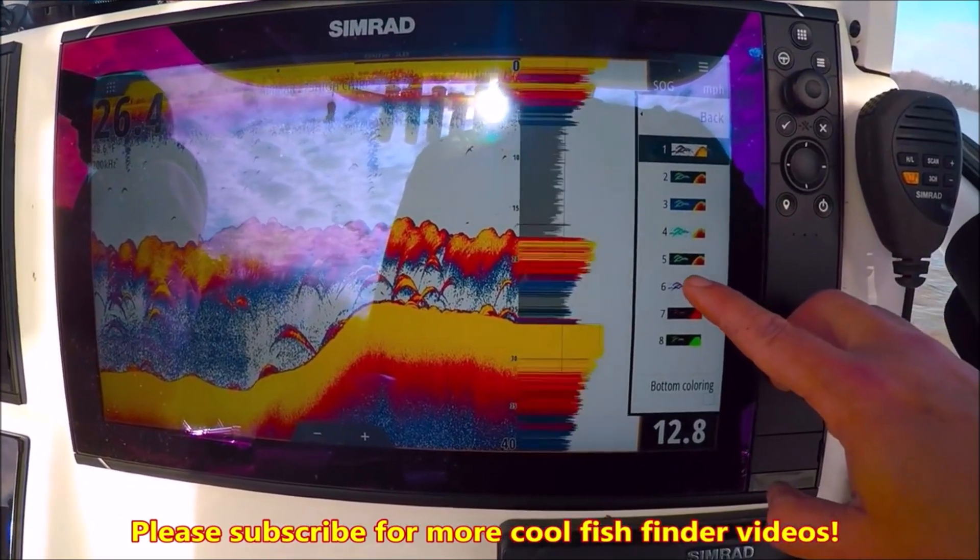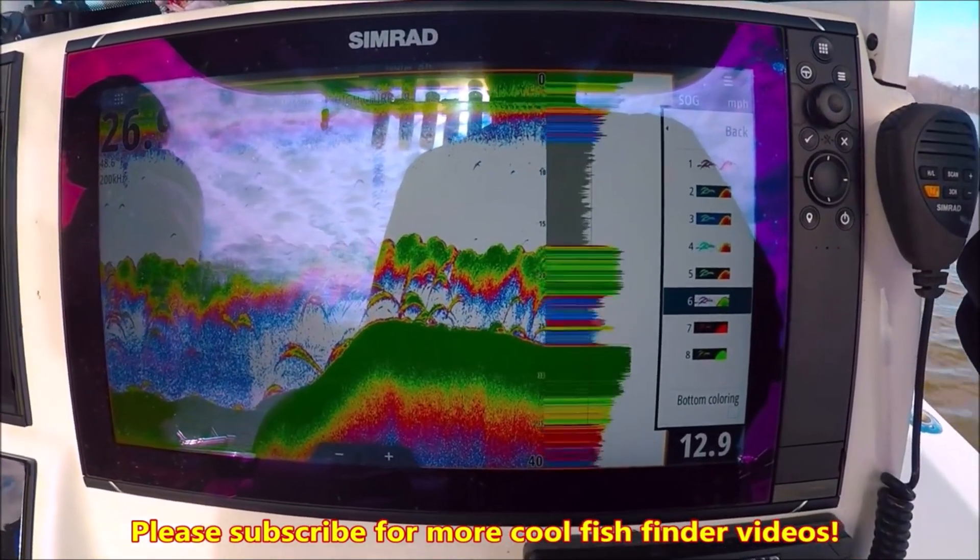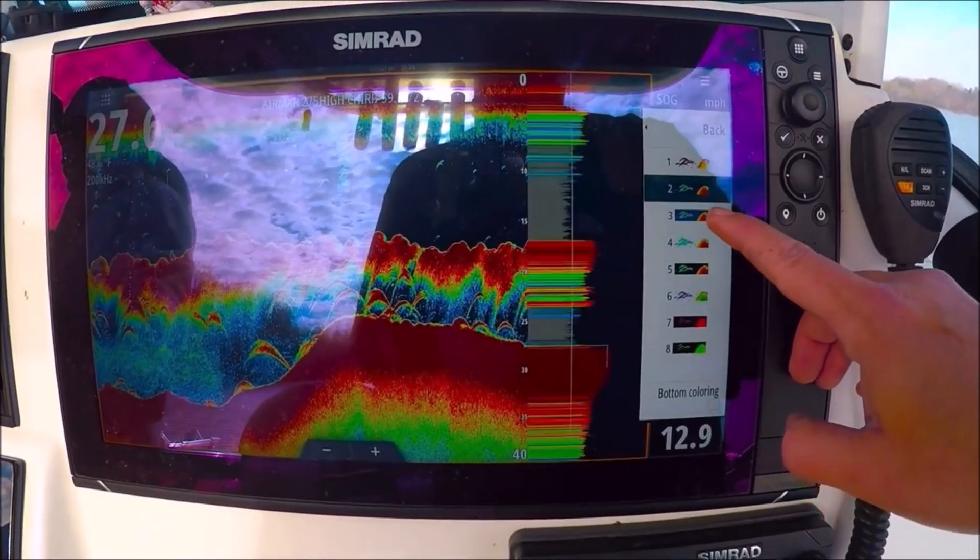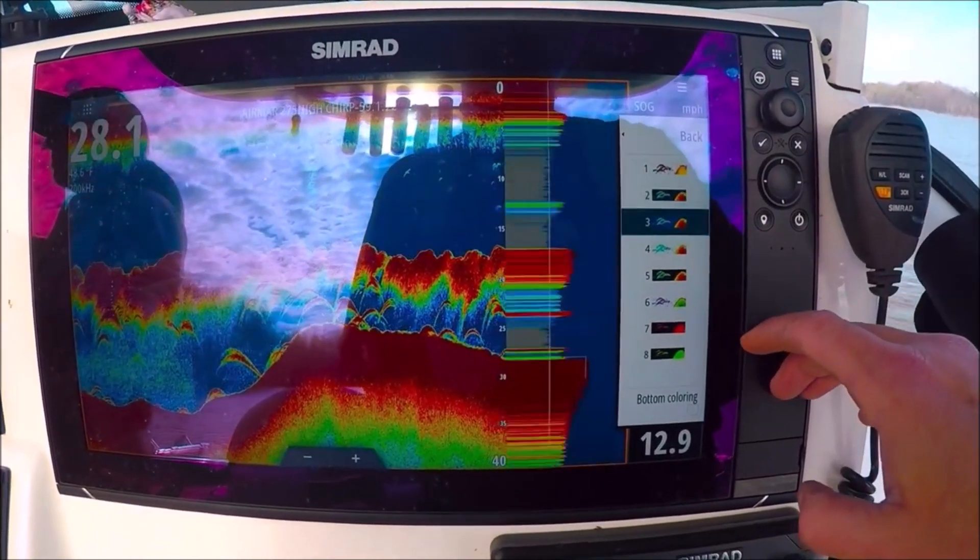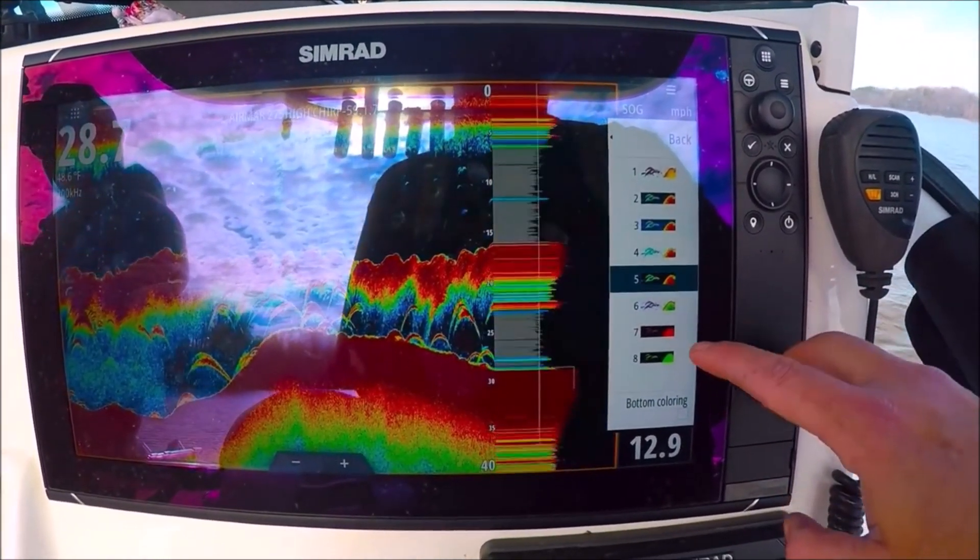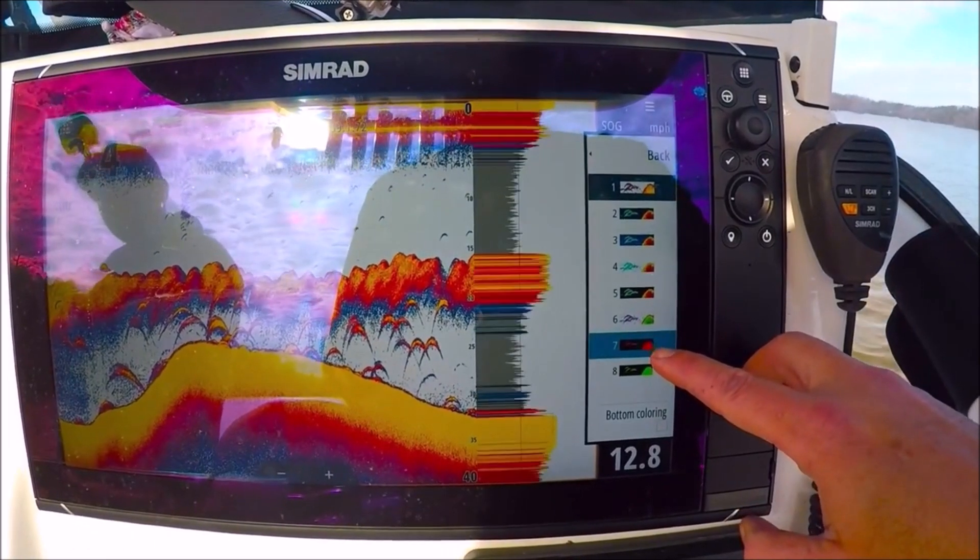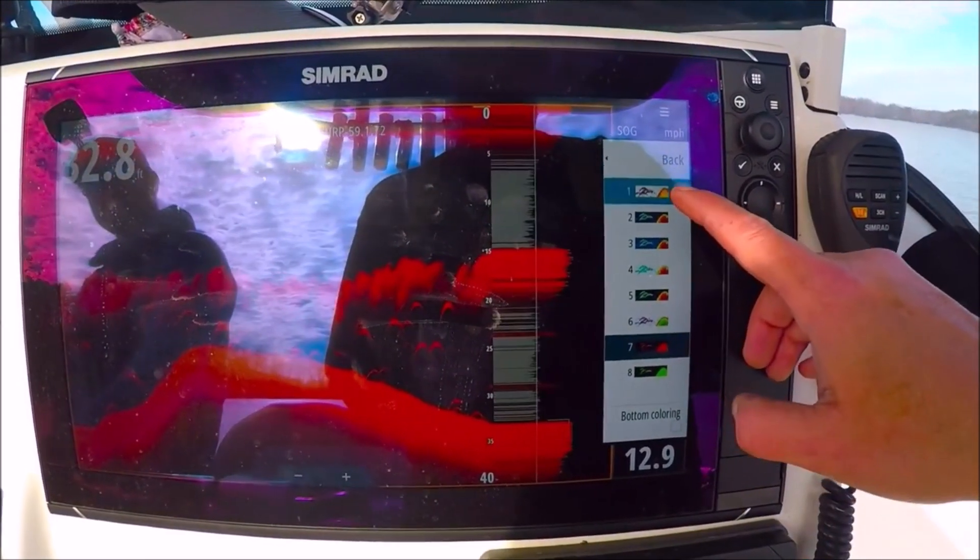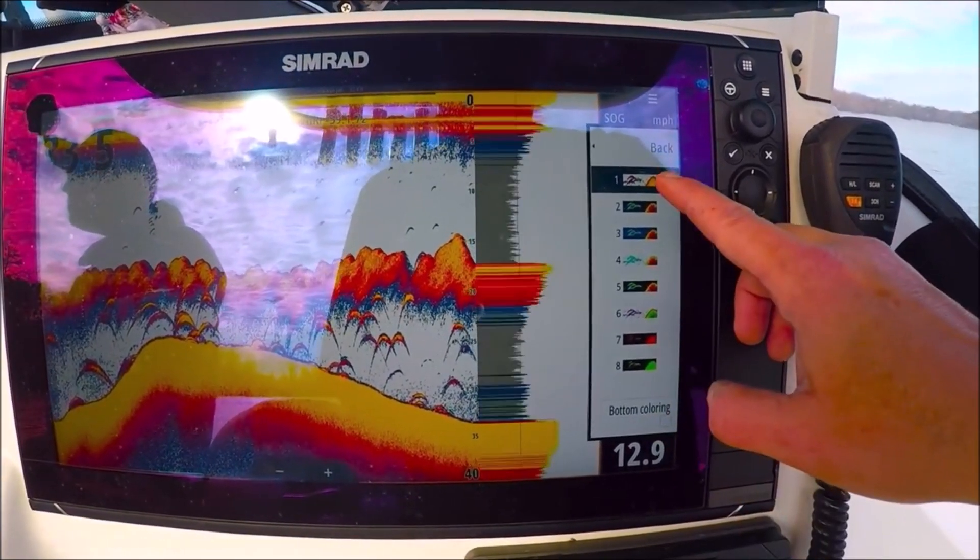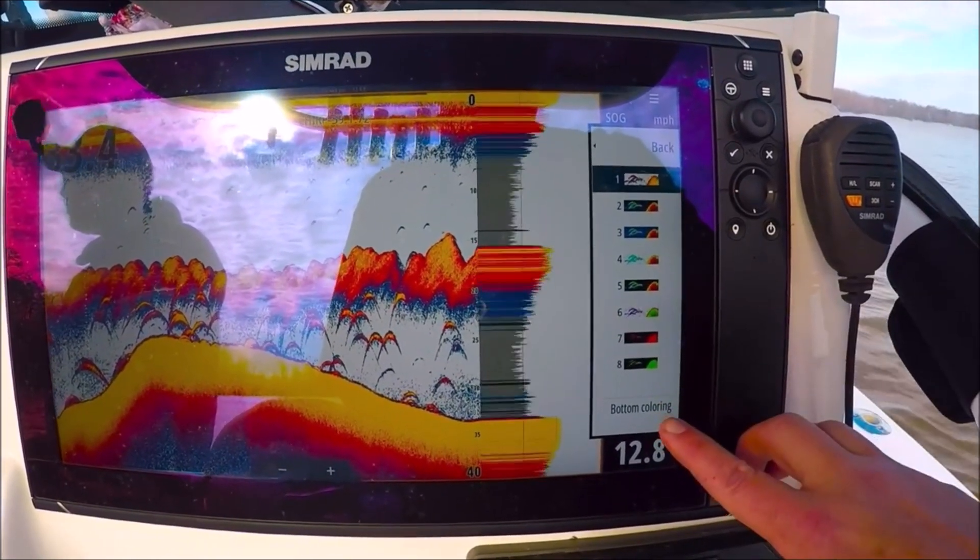Like the dark backgrounds. A lot of deep blue saltwater fishermen like these dark backgrounds. Red. All kinds of choices here. Bottom coloring.